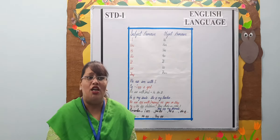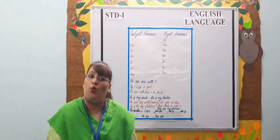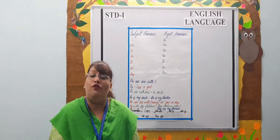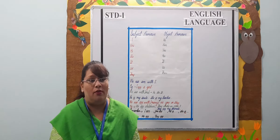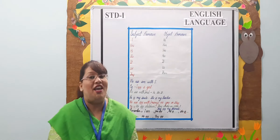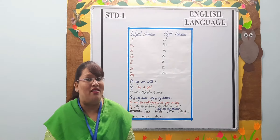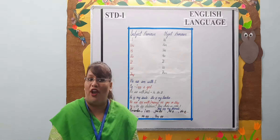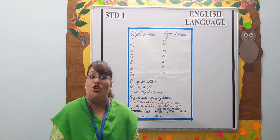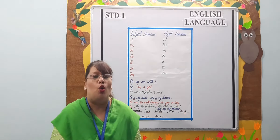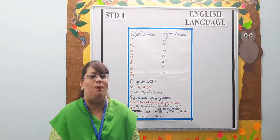He, she, and we are used for people. For example: He is my brother. He is my friend. She is my sister. We are brothers.